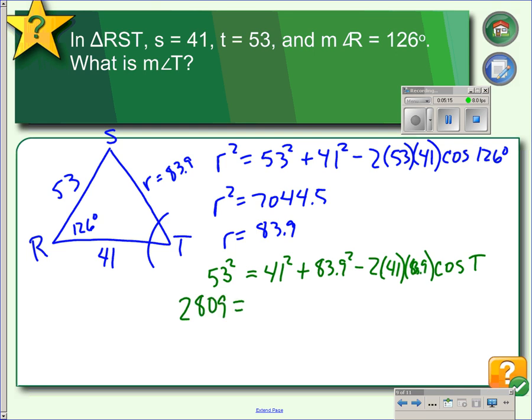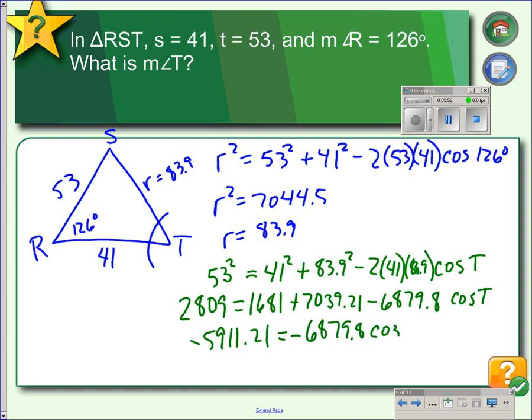Solving for T, we take 2809 minus 1681 minus 7039.21, which gives us negative 5911.21 equals negative 6879.8 cosine T. To solve for cosine T, we divide by 6879.8, and that gives us cosine T equals 0.8592.